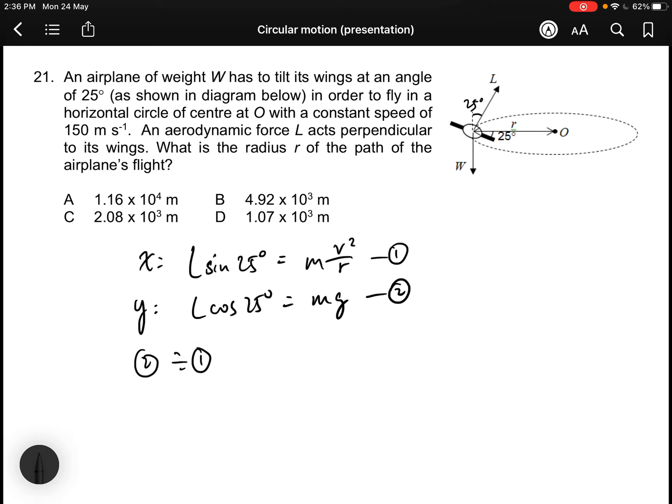Divide equation 2 by 1, so you will have gr/v² = 1/tan 25°. So r = v²/(g tan 25°). Substituting v as 150 and g as 9.81...